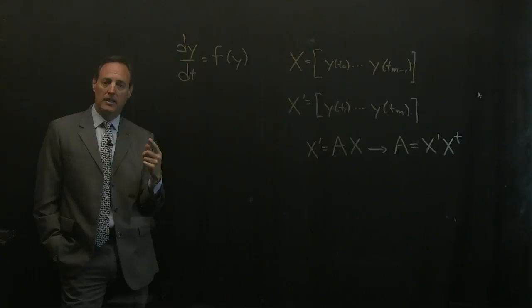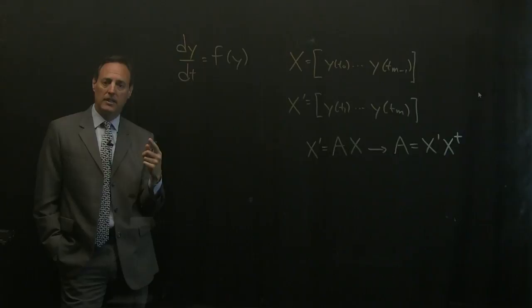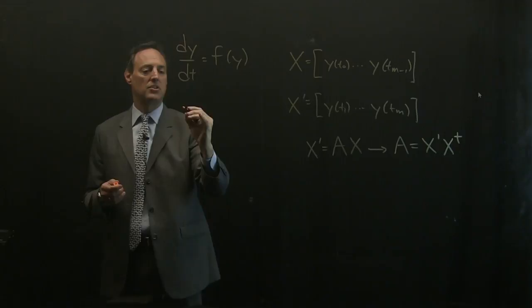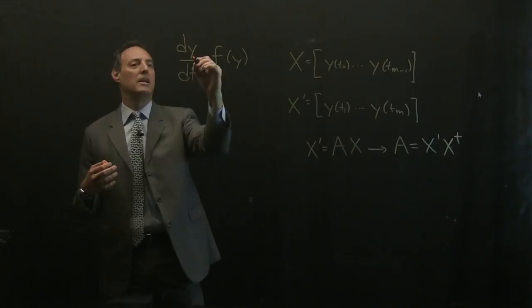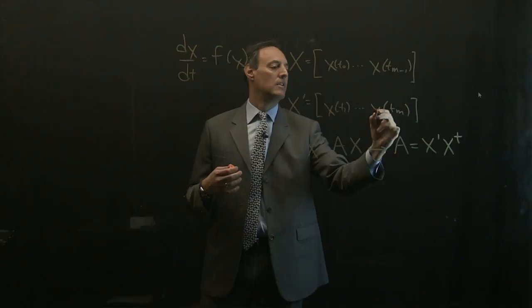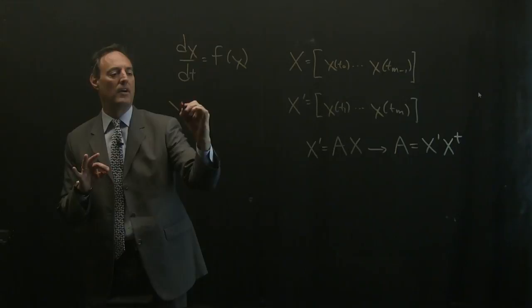So what we start talking about is Koopman theory. The idea was to say: what if I work in a new space? I have this state vector x here, and the idea with Koopman was to define a new functional space.